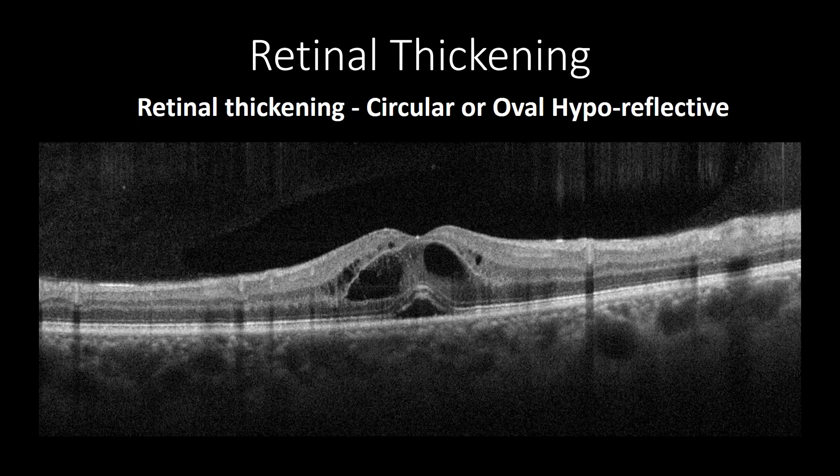Usually in cases of macular edema, there is an increase in retinal thickening and formation of cystic spaces, which can present as oval, circular, or hyperreflective spaces, with or without changes in foveal pit contour and subretinal fluid, which appears as a hyperreflective pocket above the RPE layer and underlying neurosensory retina.